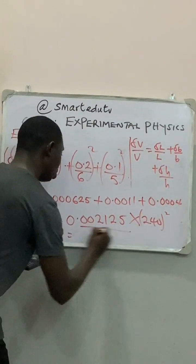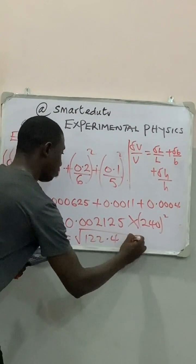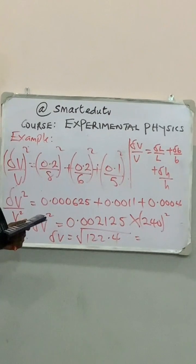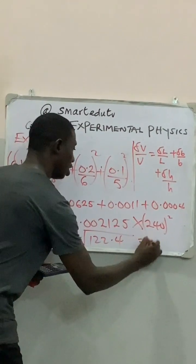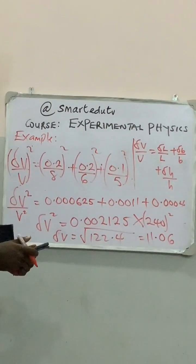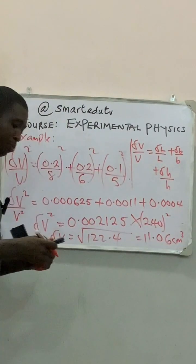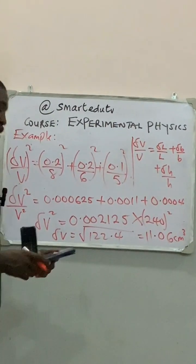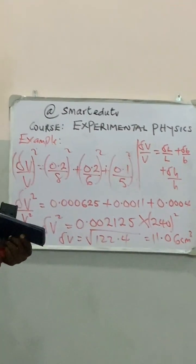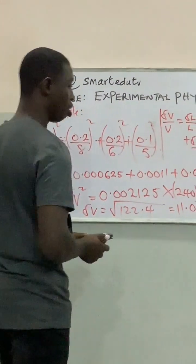So delta V will now be the square root of 122.4, which gives us 11.06. So the standard error in the volume is 11.06 centimeters cubed. This is how we evaluate the standard error in the volume in terms of either quotient or multiplication.